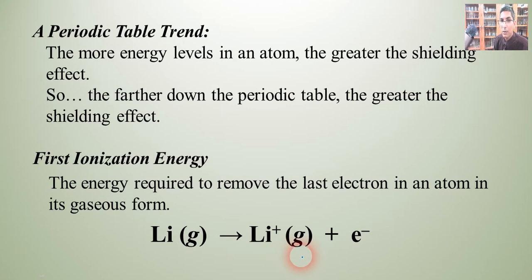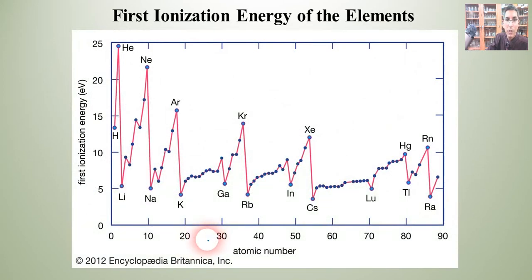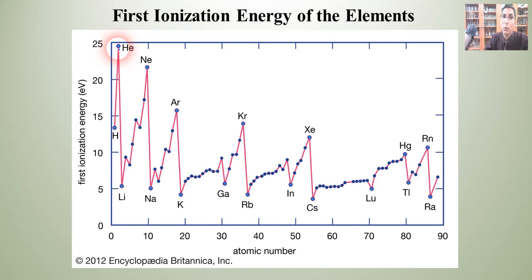First ionization energy has a very interesting trend. Hydrogen starts fairly low, then helium goes way up. Every time we add a new energy level — like we do for lithium — the shielding effect increases substantially, causing the first ionization energy to drop like a rock. Look how low lithium goes — it drops very significantly. Then as we add protons across the period, we're increasing the positive charge — the Q of our nucleus — which makes it harder to remove electrons.